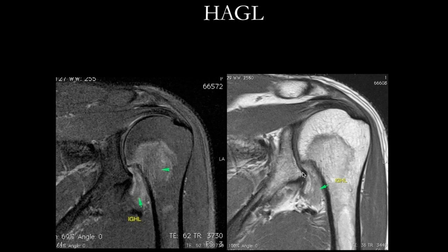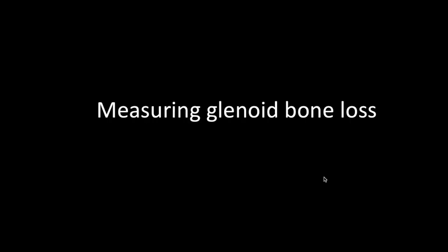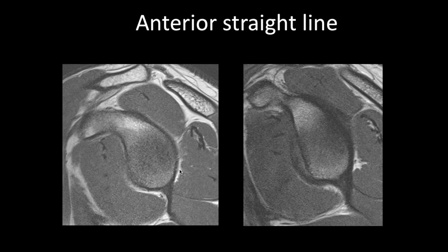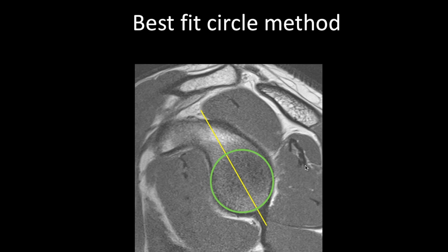Sometimes you can have osseous avulsion either from the glenoid or humeral attachment. The most important question the orthopedic surgeon is interested in is: is there anterior inferior glenoid bone loss, and if so, how much? The method we use is the best-fit circle method. The normal glenoid has a convex anterior inferior margin — a pear shape or, as Dr. Resnick says, an avocado shape. With recurrent dislocation, bone is worn off with every episode, and you start seeing a straight line where the pear shape is lost. For this measurement, you need a good sagittal plane proton density image.